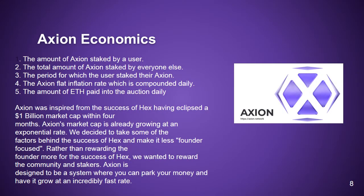AXION generates interest through the idea of inflation. The AXION smart contract pays out on 5 basic principles: 1) the amount of AXION staked by a user, 2) the total amount of AXION staked by everyone else, 3) the period for which the user staked, 4) the AXION flat inflation rate compounded daily, and 5) the amount of ETH paid into the auction daily. AXION was inspired by the success of HEX, which eclipsed a $1 billion market cap within 4 months, and AXION's market cap is already growing at an exponential rate.